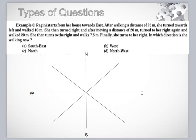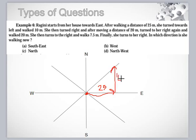Ragini starts from her house toward east. So here is Ragini at her position, and toward east she is walking. After walking a distance of 25 meters — this is your 25 — she turns toward left and walks 10. This is your 10.